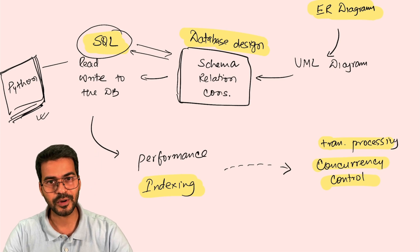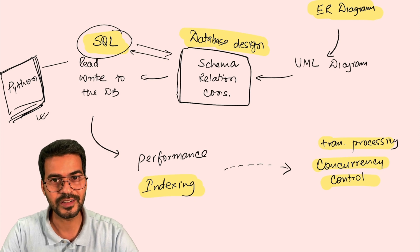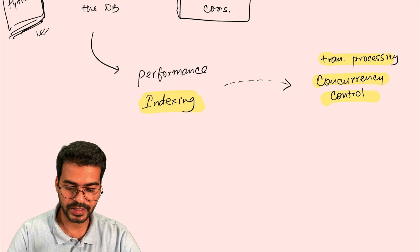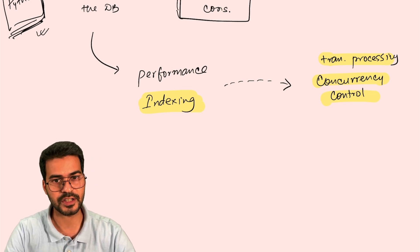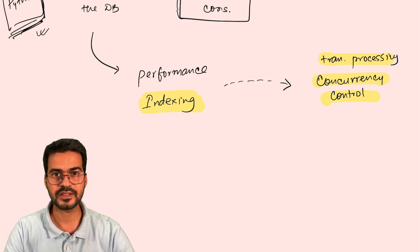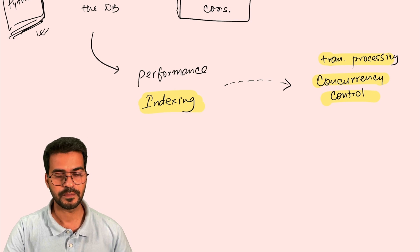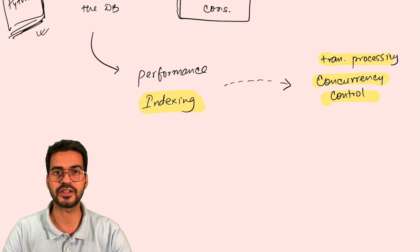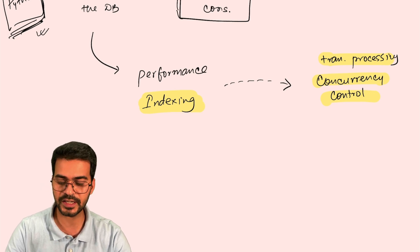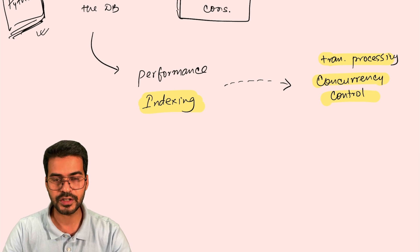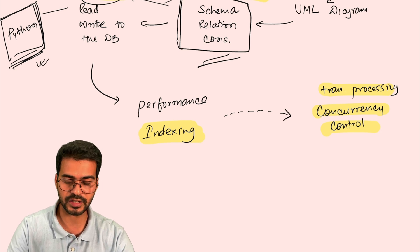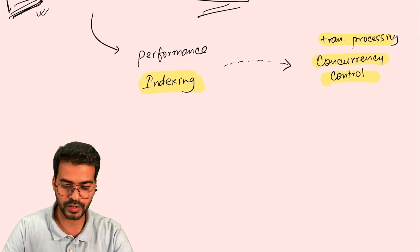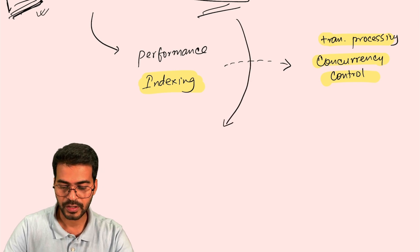That's the entire process of application development. We started from thinking about storing passwords and ended up designing a unicorn startup application. Now let's understand what happens after this. Once you have a successful product, the problem you face is related to decision making. You want reports about your users - how they're accessing the application, where they're dropping off - all those analytics. For bigger applications, this is not done directly on the operating database.